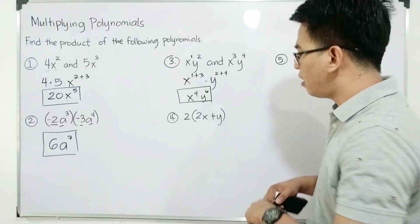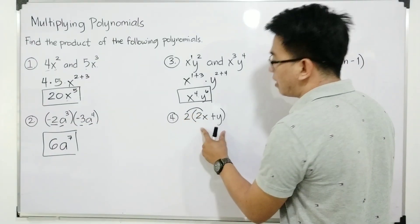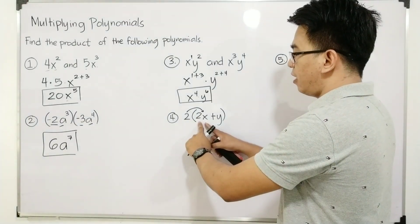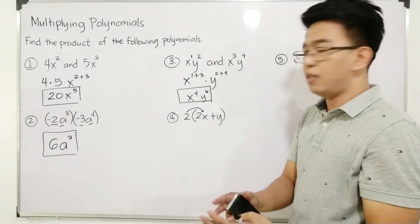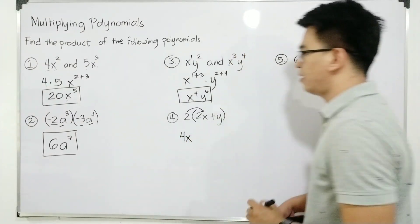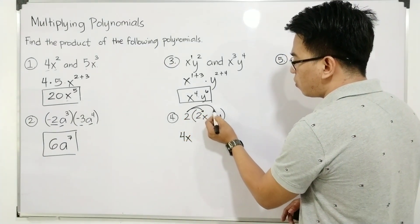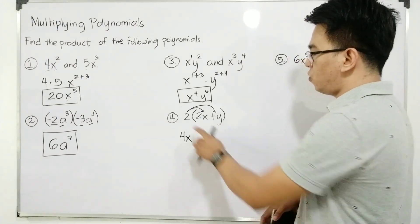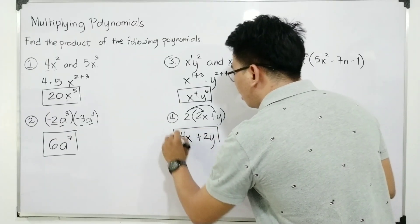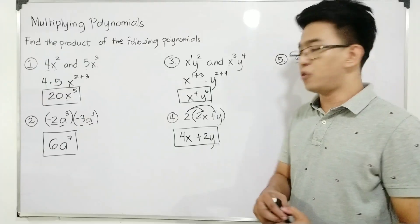In the distributive property, we will simply distribute or multiply one by one to the terms of the binomial inside the parentheses. So what happens here is: first, multiply 2 by 2x. The product of 2 and 2x is equal to 4x. Second, applying the distributive property, multiply 2 by 2y. So 2 times y gives us the product of 2y. Therefore, our answer in item number 4 is 4x plus 2y.